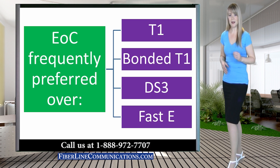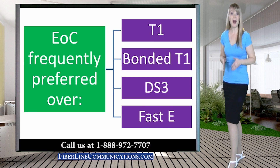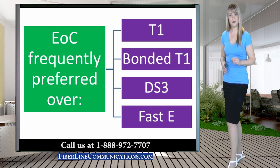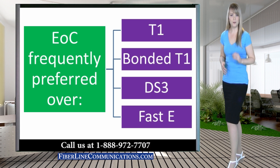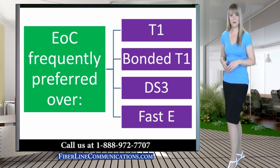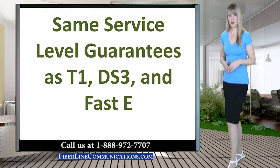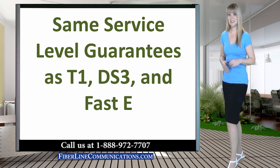Because of the extreme cost savings provided by Ethernet over Copper, it has become a very popular choice for replacing T1, bonded T1, fractional DS3, full DS3, fractional Fast-E, and full 100 Mbps Fast-E. Ethernet over Copper is provided with the same service level guarantees as T1 and DS3.